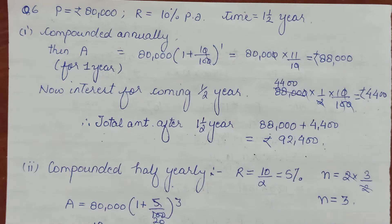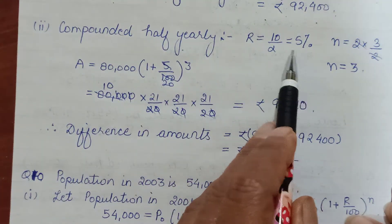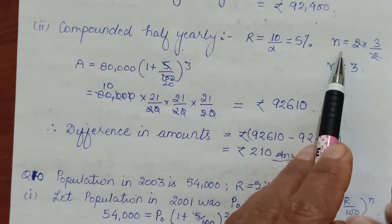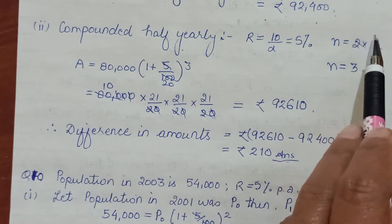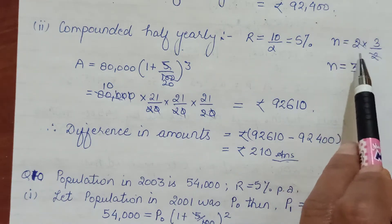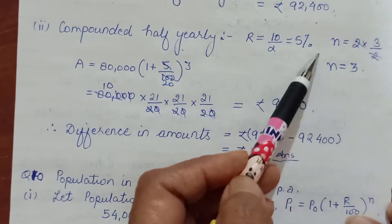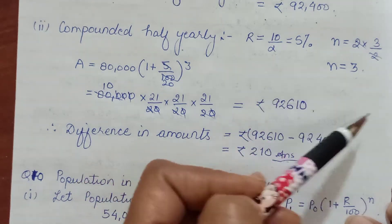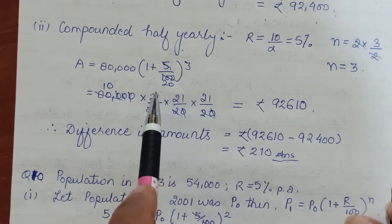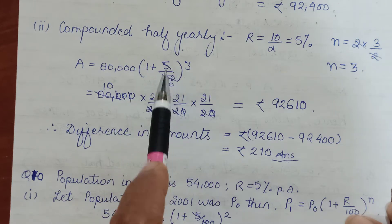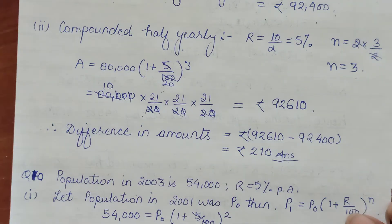Now if the compounding was being done half-yearly, then you halve the rate to 5%, and n means the number of times you get this interest. One and a half years means 3/2 years, so we double it because half-yearly means two times a year. N becomes 3. A = 80,000(1 + 5/100)^3. Canceling it out: 5, 20 times, cancel this 20 plus 1, 21. 21 cubed upon 20, 20, 20.